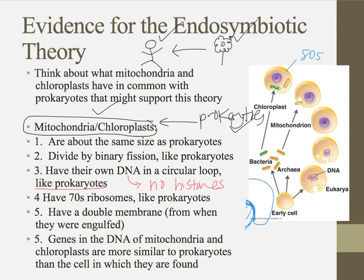They also have a double membrane: when they were originally engulfed, they already had their own membrane, and when the cell wrapped them in a vesicle, that became a second membrane around them. Finally — and this is number six — the genes found in mitochondria and chloroplasts are much more similar to prokaryotes than to the rest of the eukaryotic DNA. Quite a lot of evidence supports that these organelles originated from prokaryotic cells.